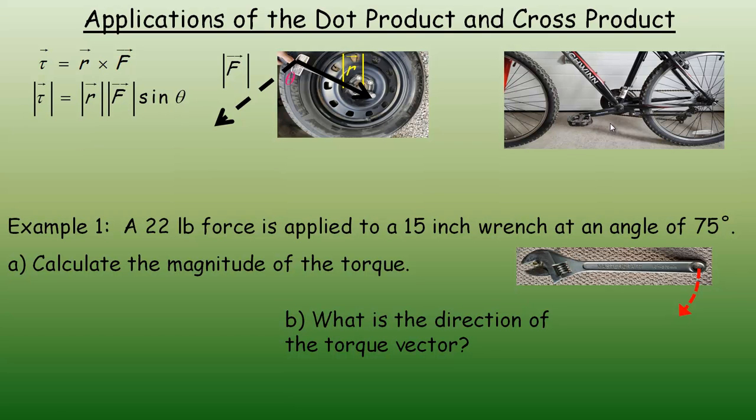In the image of the bicycle, the R vector would be the length of the crank. There's some force applied at some particular angle, not necessarily 90 degrees. Ninety degrees gives you the optimum torque, but you can't always apply the force vector at a right angle to the R vector.